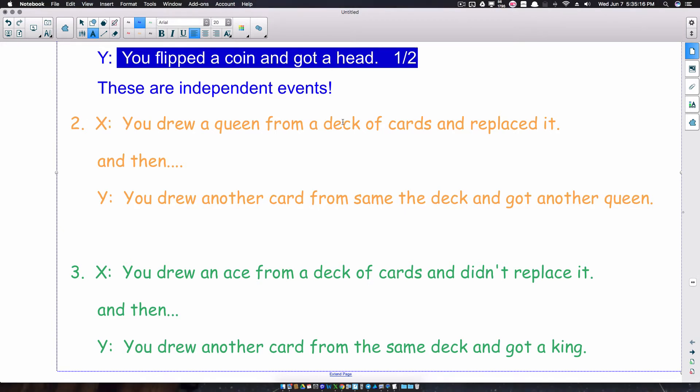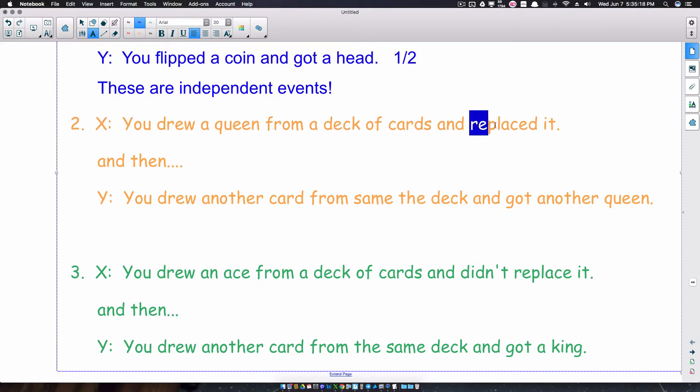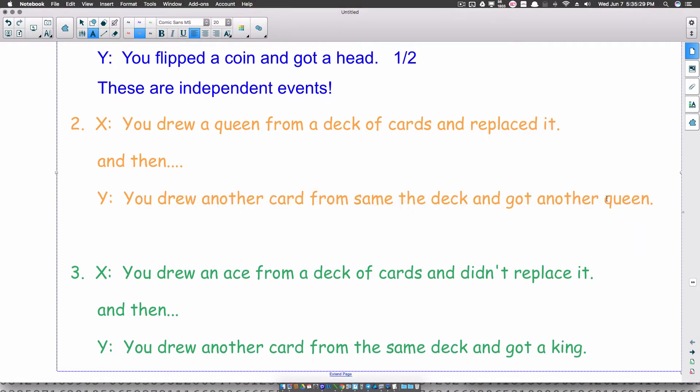Event X, you drew a queen from a deck of cards and you replaced it. And then, event Y: you drew another card from the same deck and got another queen. Okay, so let's talk about this. Let's just talk about this event right here. The probability of you drawing a queen from a deck of cards is 4 out of 52 because there's 4 queens out of 52 cards. Sorry if you can hear the helicopter in the background. But 4 over 52 simplifies to 1/13.